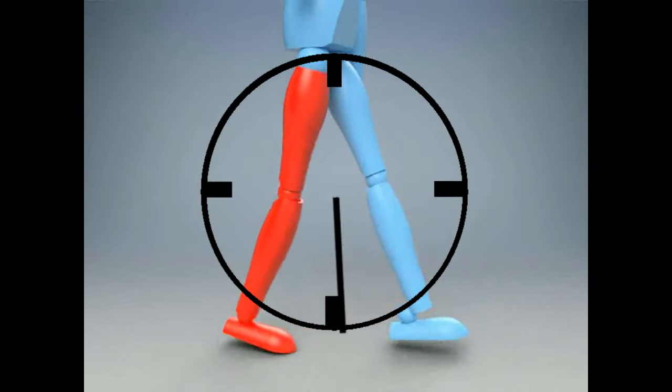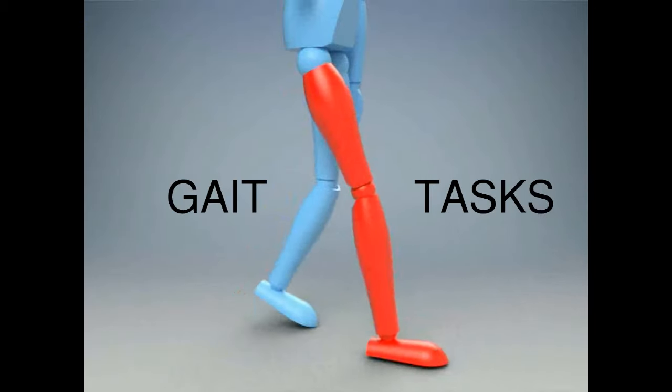For a successful gait cycle, the reference limb must do three things, which we call gait tasks.